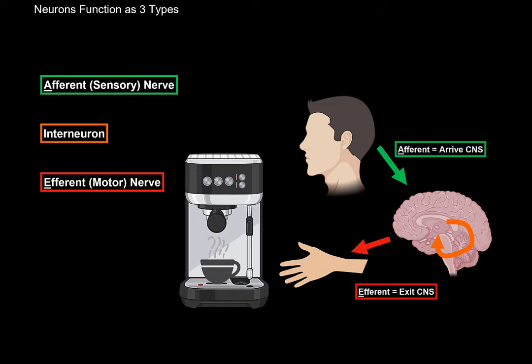So remember, afferent neurons arrive into the central nervous system. Efferent neurons, they exit the central nervous system.